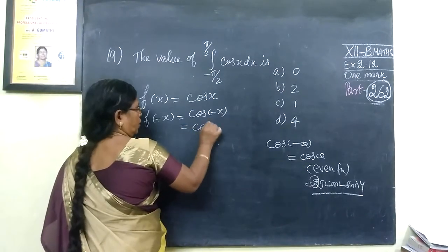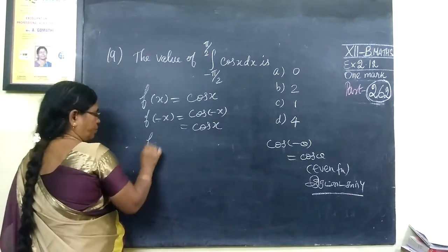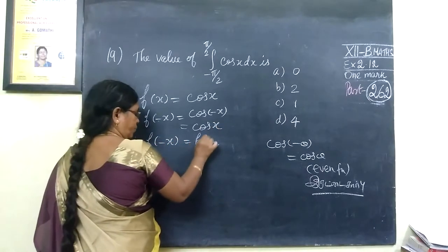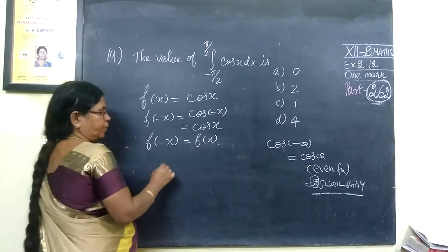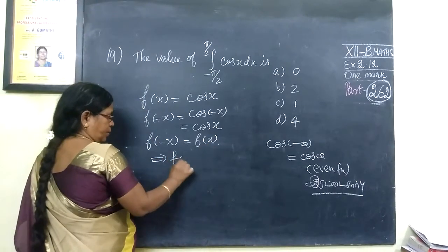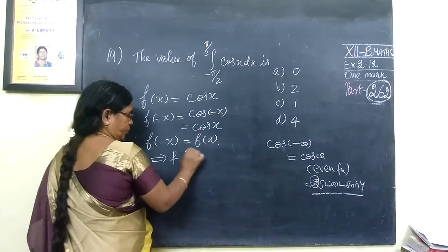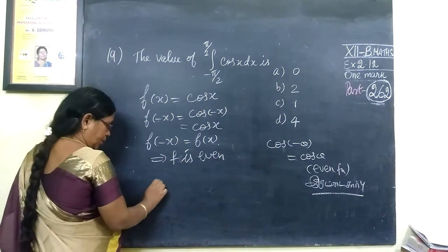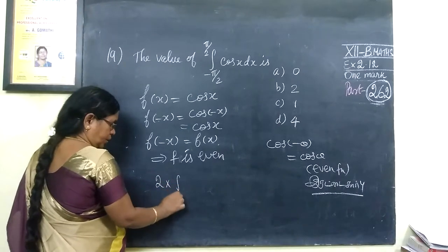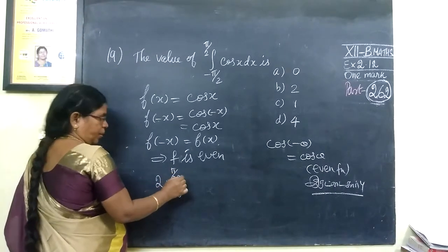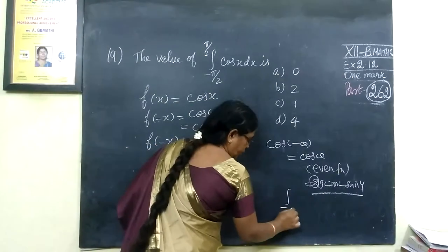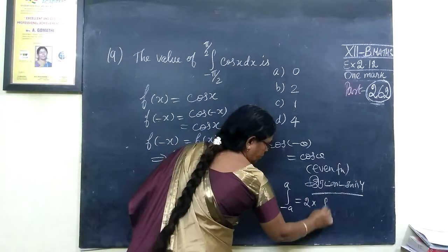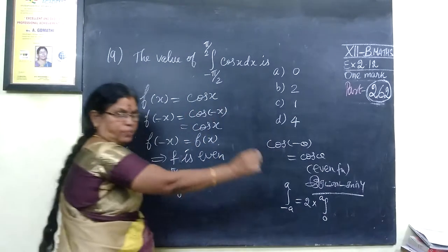So, that is, the function is cos x. So, f of minus x equals f of x. This is equal to e. We are going to select the even function property: twice into integral 0 to pi by 2. And we are going to use minus a to a equals twice into 0 to a.